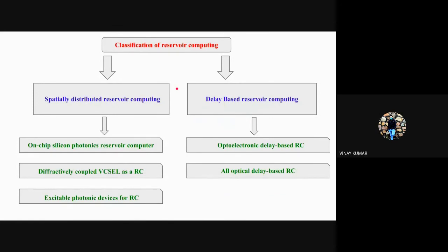These are the classifications I have shown earlier. The first one is spatially distributed reservoir computing and then there is delay-based. The major difference is that in spatially distributed reservoir computing the neurons are gathered in space, while in delay-based there is a single neuron which is provided delayed feedback.